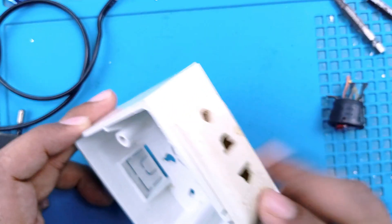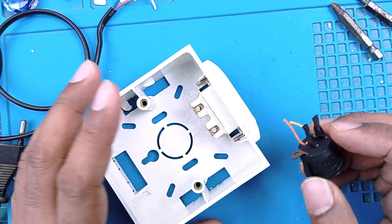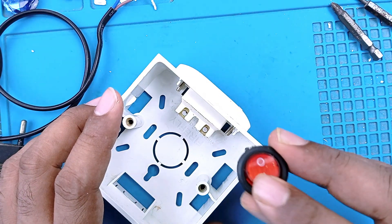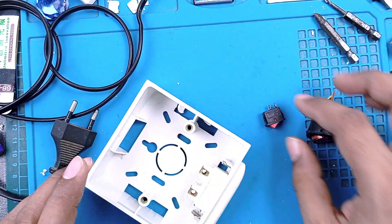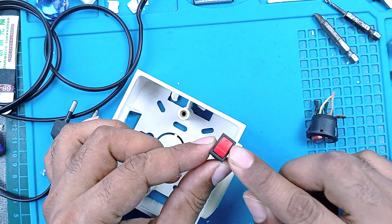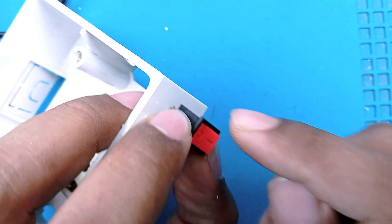Finally, we can attach our socket with screws. Now we'll try to attach the switch. I think this little switch will work, so I don't need the big switch.